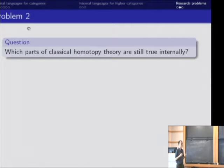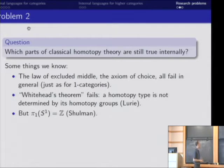Once we've got that working, the next question is, what parts of classical homotopy theory are still true internally? So we know that the law of excluded middle and the axiom of choice and so on are still generally going to be false, just like they do for 1-categories.